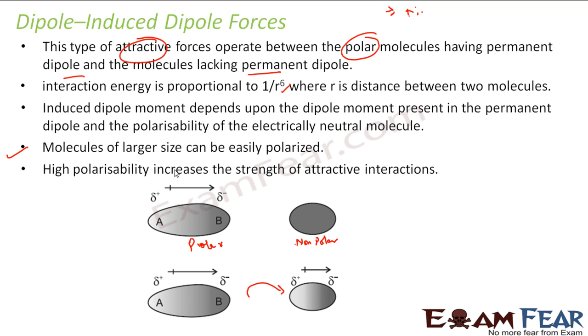And high polarizability increases the strength of attractive interaction. Obviously, because when it is more polarizing, it will get more positive negative charge. The more positive charge, the attraction will be more.